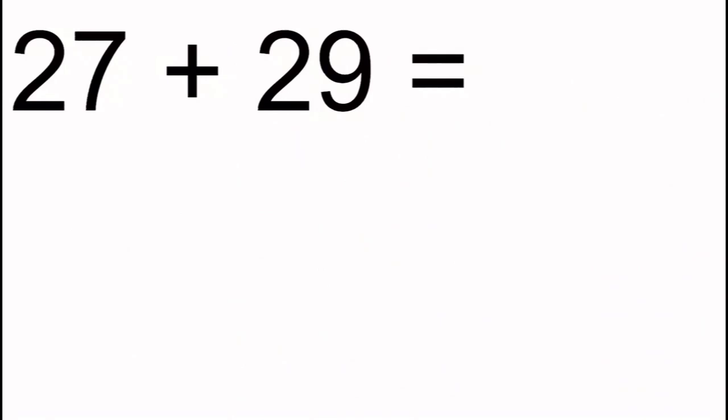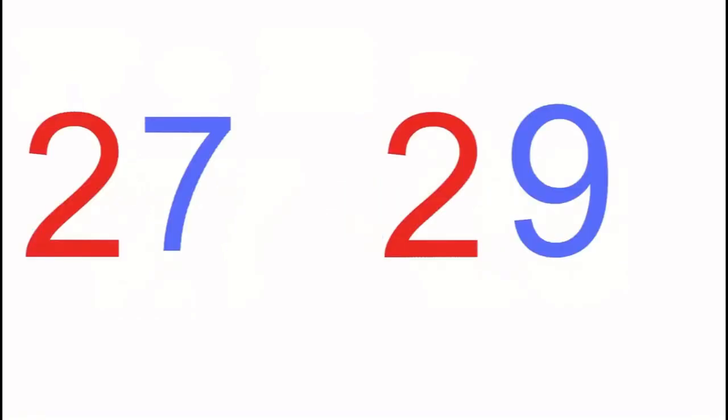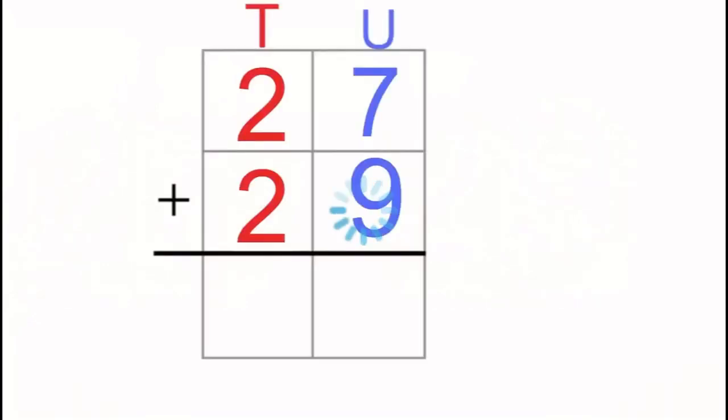Now we can think about doing a sum that's a little bit more difficult using exactly the same method. Again, we're going to look at both of the numbers all by themselves and split them into their tens and units. We can see that 27 is made out of two tens and seven units. And 29 is made out of two tens and nine units. We've put that into the column addition with all of our units down this side and all of our tens down this side.